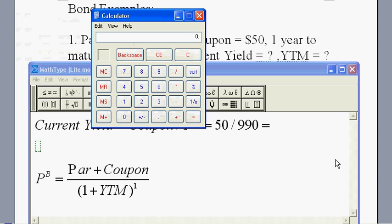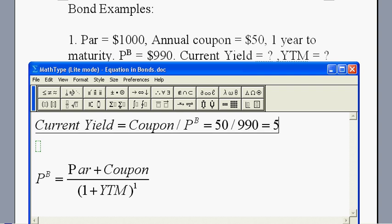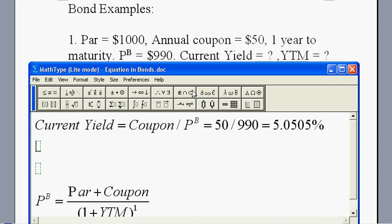Let's take out our calculator. $50 divided by $990, we got 0.050505, so it's about 5.0505%. We can round this number up a little bit.